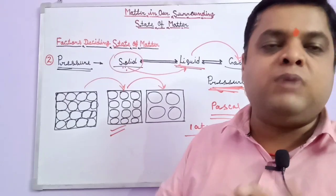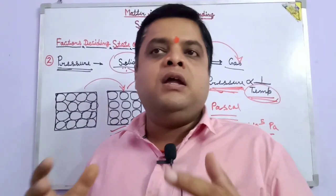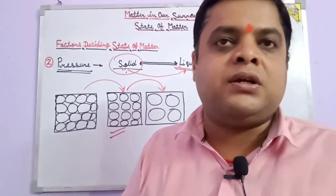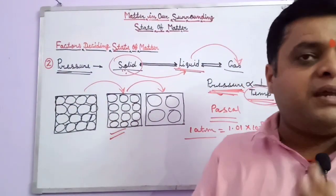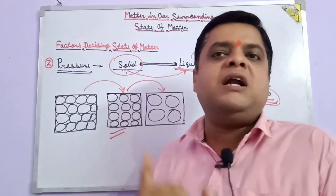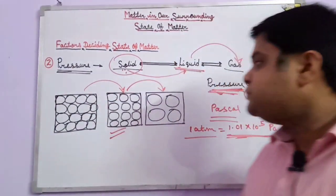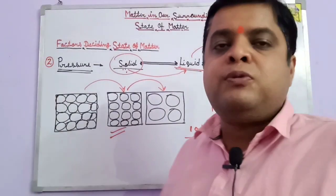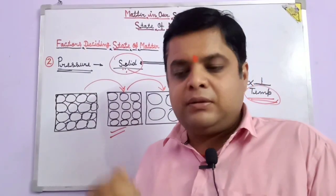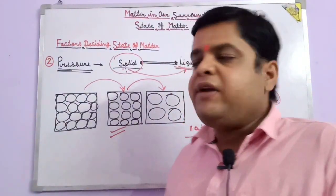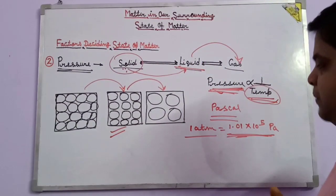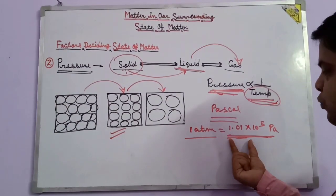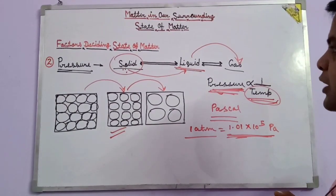Atmospheric pressure acts on the human body from all sides. We can measure atmospheric pressure with the instrument called a barometer. One atmospheric pressure is about 1.01 × 10⁵ Pascal.